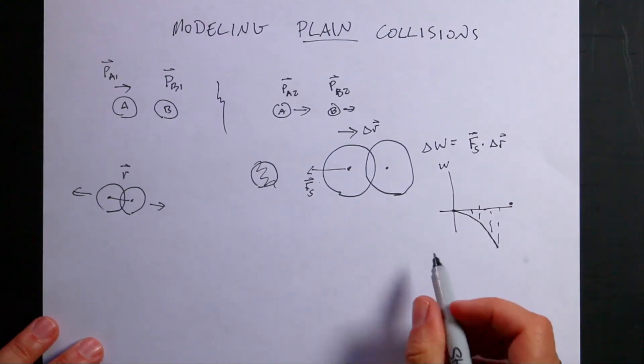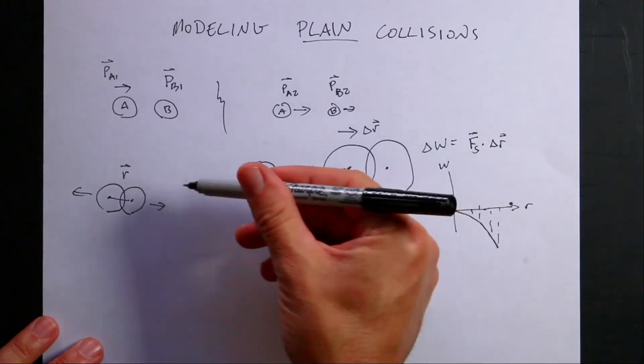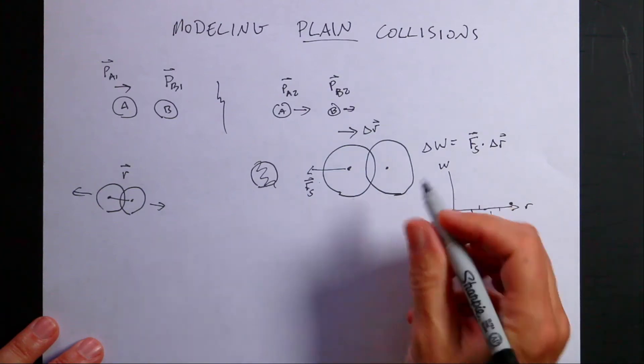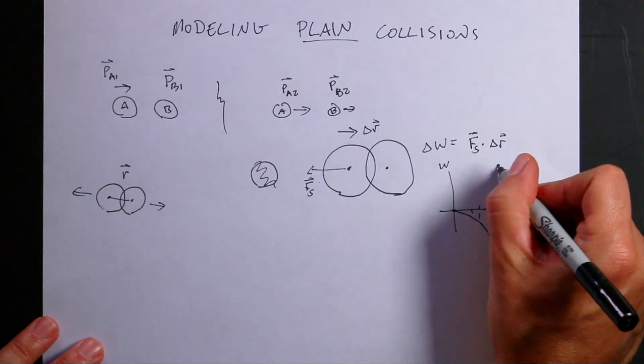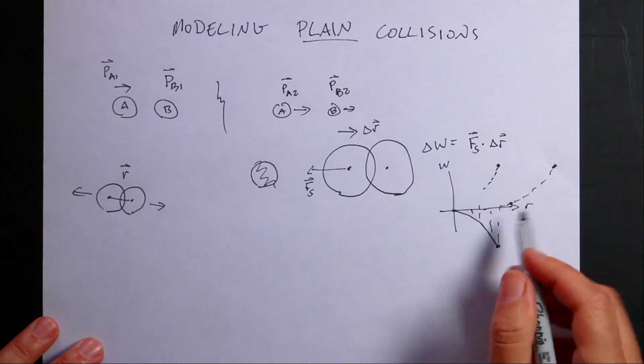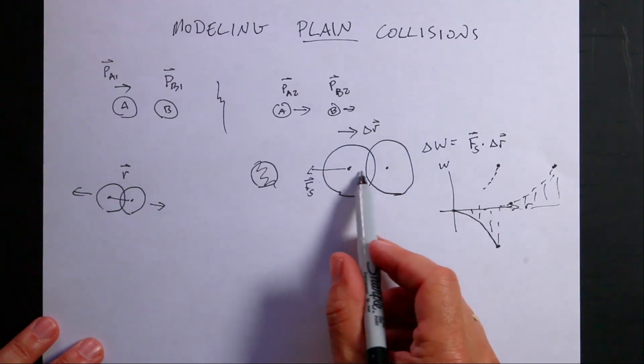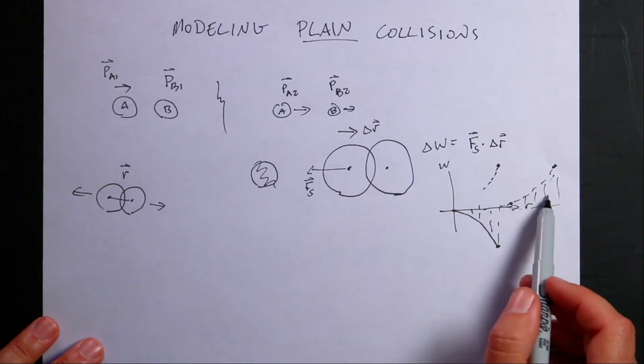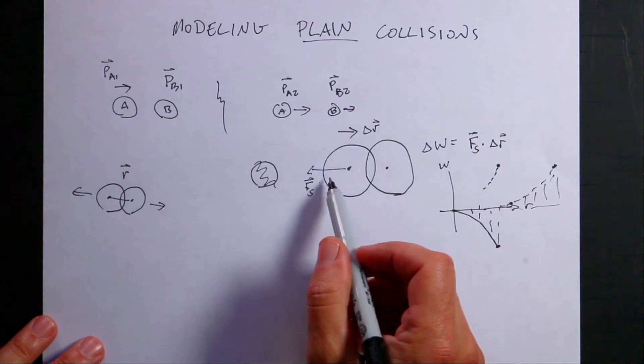Now what happens as it starts pushing back the other way? It's going to be moving the other way, so it's actually going to be doing positive work with a smaller and smaller R. The point is that as it comes in and bounces and pushes back, the spring does negative work on this ball, and then it does positive work on the ball. The total work is zero, such that the change in kinetic energy would be zero.